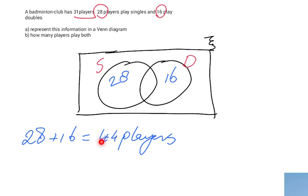So that is too many players. And how many players are too many? Well, if I take away the 31, I have 13 players too many.